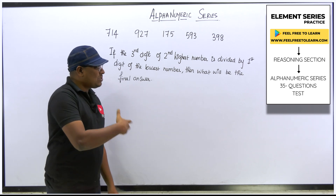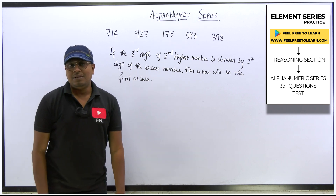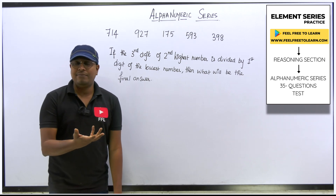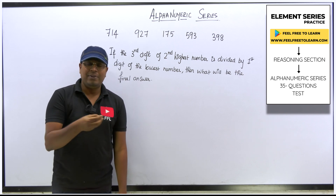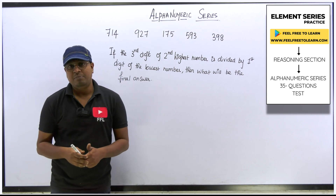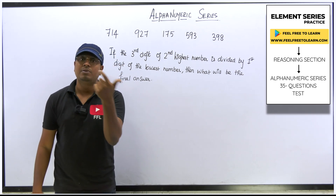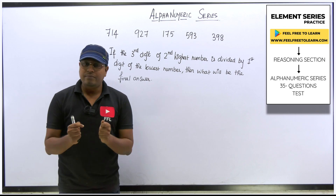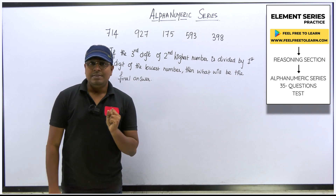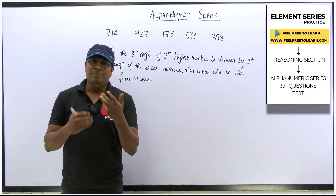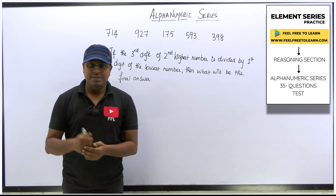I hope you understood what alpha numerical series is. There are many more easy and difficult level questions that can be asked from this topic. Here we solved three-digit number questions, but in some exams four-digit numbers may also appear. Do not forget to practice the 30 questions provided. Thank you so much for watching — if you liked it, share this video with friends preparing for competitive exams. Thank you, bye!